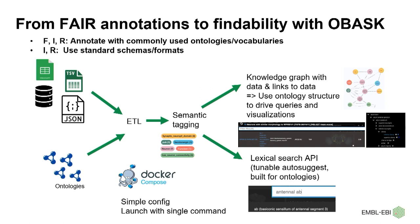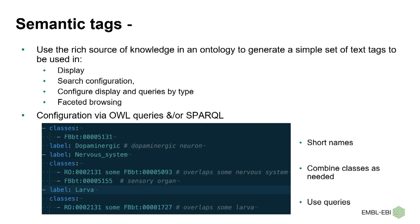At the heart of it is a semantic tagging system. Ontologies are incredibly rich in terms of using the ontology structure to find things, but there's a lot of complexity that makes it hard. The idea is to come up with a simple system that uses the power of the ontology knowledge but tags in simple ways for applications. By running this, you get a knowledge graph with data and links to data, the ability to use ontology structure for visualization and queries, and a nicely advanced tunable lexical search API.